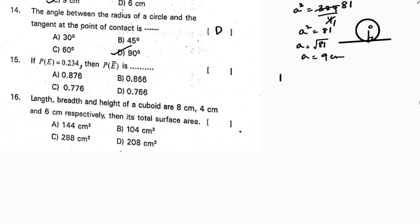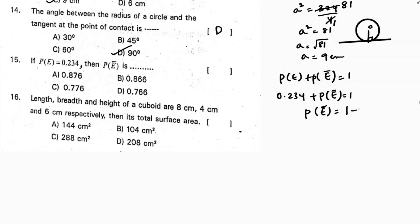Next: the probability of event A is 0.234. Since P(A) + P(not A) = 1, we have P(not A) = 1 − 0.234 = 0.766. Calculating: 1.000 − 0.234 = 0.766. Correct option is D.